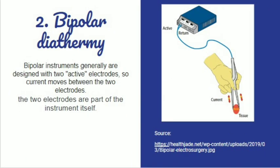The second type is bipolar diathermy. Bipolar means two poles — two active electrodes and no ground electrode. Bipolar instruments are designed with two active electrodes so current moves between them; the two electrodes are part of the instrument itself. As you can see in the figure, they are side by side attached to each other, and they look like a forcep or tweezers more precisely.